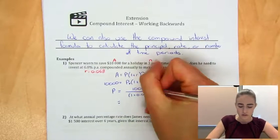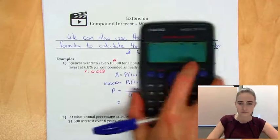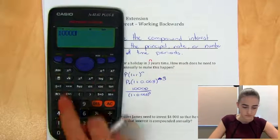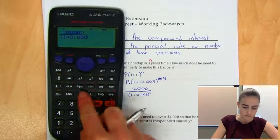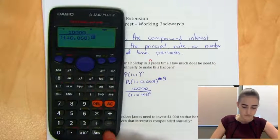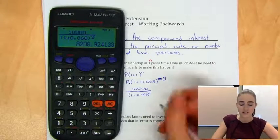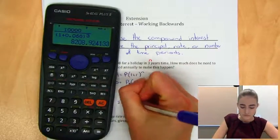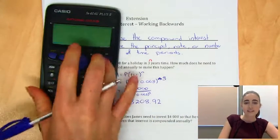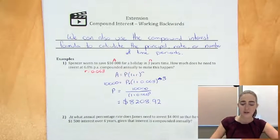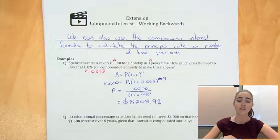So we're going to put that whole, sorry, that $10,000, that whole thing in our calculator. We'll end up with $8,208.92. So that's the amount of money that you'd have to invest now under these conditions to end up with $10,000. So that's finding the principal. Let's have a look at the next one.